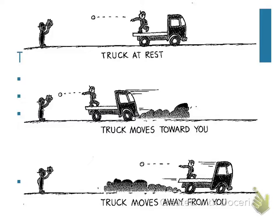Looking at this graphic: a guy is standing on a resting truck bed and throwing a baseball at a kid. The kid is at rest, the guy is at rest, so the ball comes at a normal speed. Now if the truck starts moving toward you while you're catching — is that baseball going to move faster or slower? It's going to appear to move faster because the thrower is in motion and he's putting the ball in motion too.